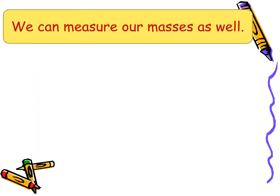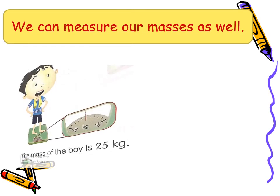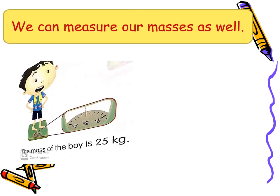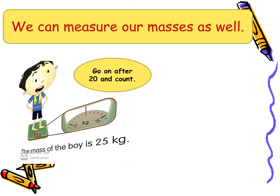We can measure our own mass as well. Look at the boy. The mass of the boy is shown on the scale. Because we are measuring in kg, we will count after 20: 21, 22, 23, 24, 25. So the mass of the boy is 25 kg.